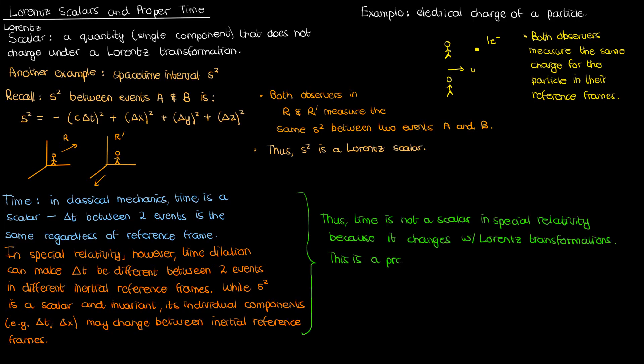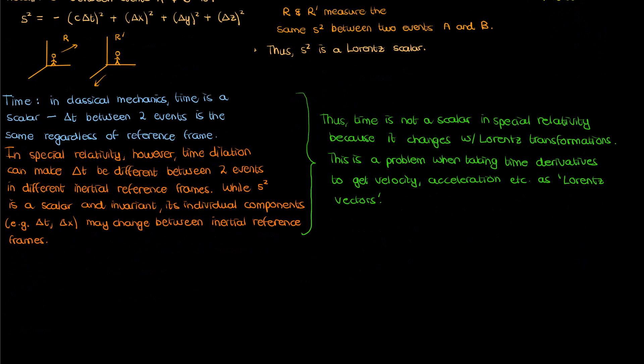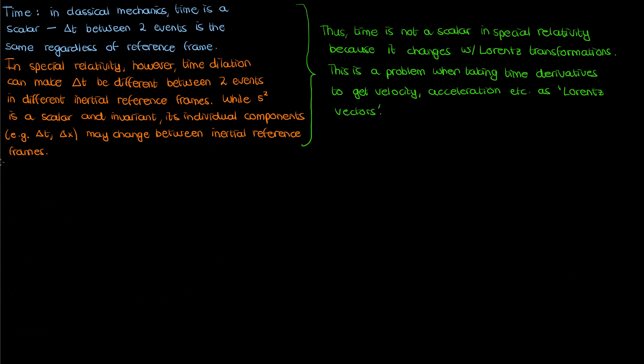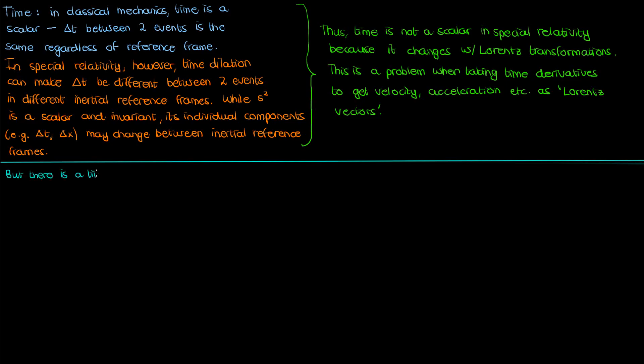If time isn't a scalar in special relativity, we have a problem: if we want to take derivatives with respect to time to get quantities like velocity and acceleration, we need those derivatives to be with respect to a scalar, otherwise we won't end up with a proper Lorentz vector. We need a time quantity that is invariant under Lorentz transformations — a Lorentz scalar. Fortunately, such a time quantity exists, and it's called the proper time interval.